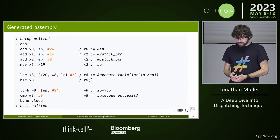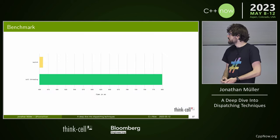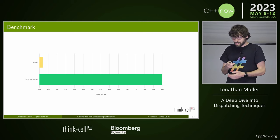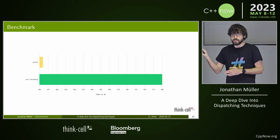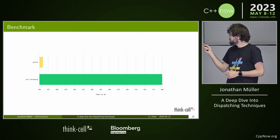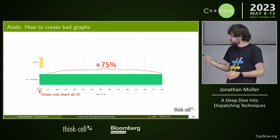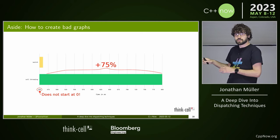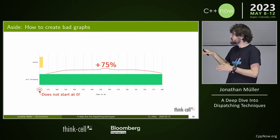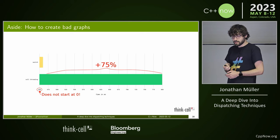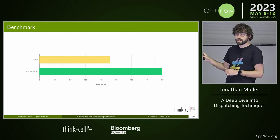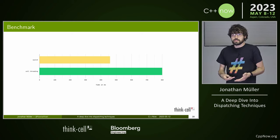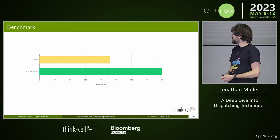Let's benchmark it. Switch was the baseline and the function pointer version is significantly slower — except it's not significantly slower because the bar graph doesn't start at zero, it starts at 450. That big spike is actually only a small percentage difference. Always watch out for that in publications. The actual difference, starting from zero, is modest — but still slower.